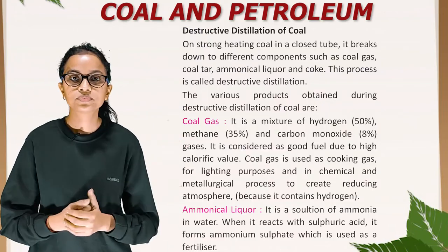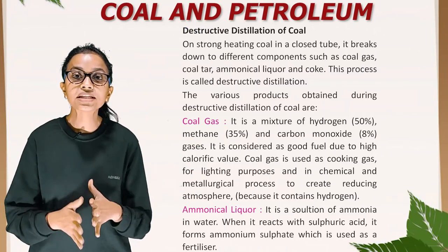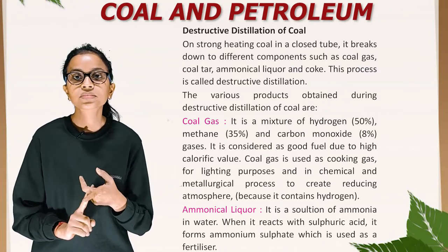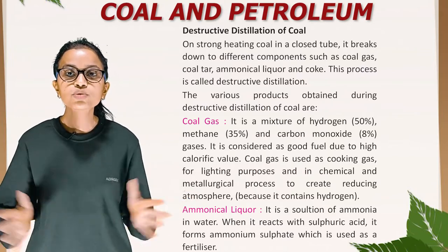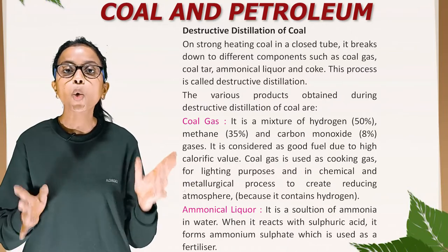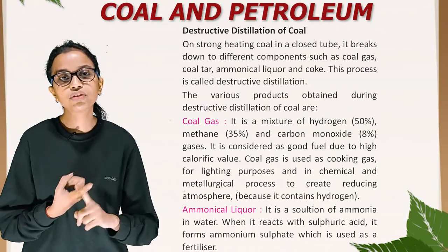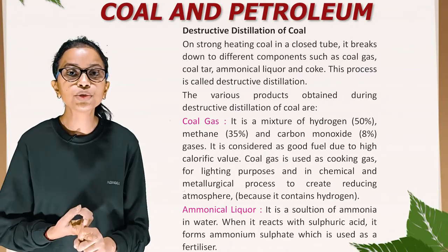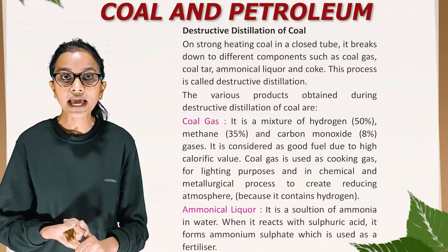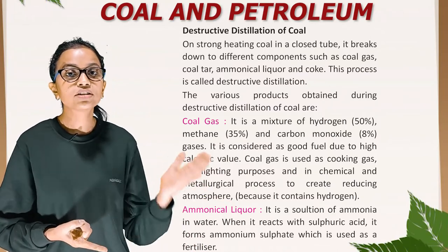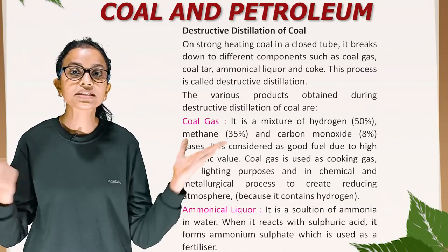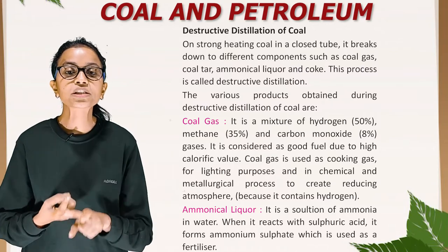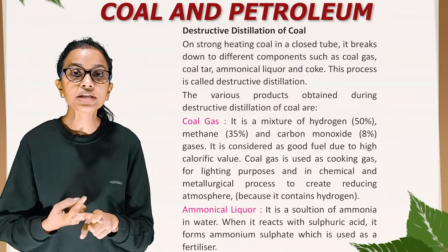Destructive distillation of coal: On strong heating of coal in a closed tube, it breaks down to different components such as coal gas, coal tar, ammonical liquor and coke. This process is called destructive distillation. Coal gas is a mixture of hydrogen 50%, methane 35% and carbon monoxide 8%. It is considered a good fuel due to its high calorific value and is used as cooking gas, for lighting purposes, and in chemical and metallurgical processes to create a reducing atmosphere. Ammonical liquor is a solution of ammonia in water; when it reacts with sulfuric acid, it forms ammonium sulfate, which is used as a fertilizer.